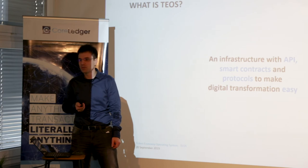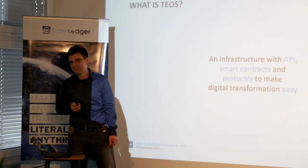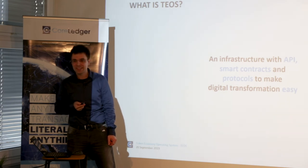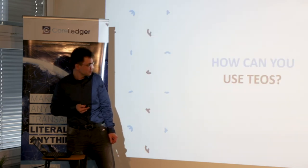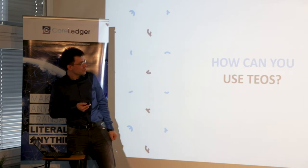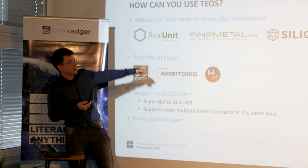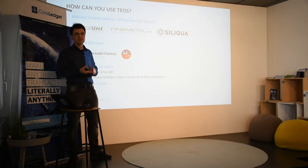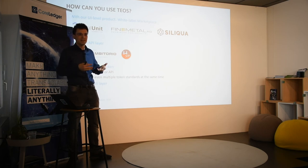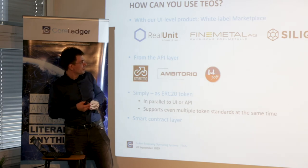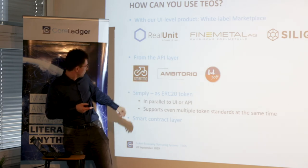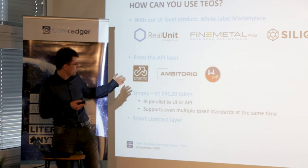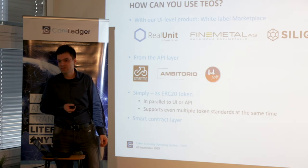Next Tuesday there will be the go-live of SmartMo — you can witness that in Luzern. The hardware is already installed, so that's our second rollout. Ambitorio will come a little bit later. How can you use TEOS? You can use it on a UI layer — we have a white-labeled marketplace which allows access to all those features: documenting things, creating your own asset tokens, putting a compliance controller on it, and making sure that only the people you want can trade your token. Three partners are already running on it. You can also use it from the API layer, which is exactly what SmartMo, Ambitorio, and BD300 — the game published in April — are doing.